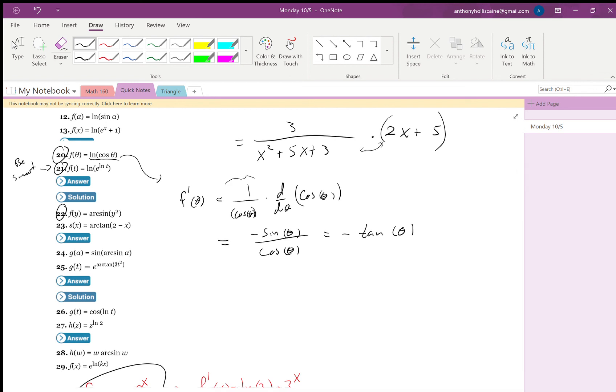So a function whose derivative is negative tangent is the natural log of cosine of theta. So that's kind of gross, but okay, it is what it is. That was 20. Let's look at 21. Okay, so again, be smart. So f(t) is the natural log of e to the natural log of t. And e to the natural log of t - that's just t. So really, f'(t) is just 1 over t. That's it.